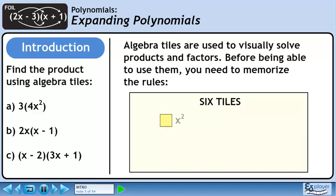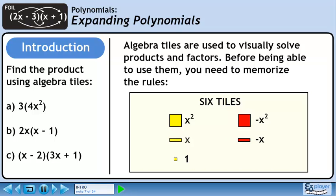There are six unique algebra tiles. The first tile is a large yellow square that represents positive x squared. The next tile is a yellow rectangle representing positive x. This tile is a small yellow square that represents positive 1. The large red square represents negative x squared. The red rectangle represents negative x. The last tile is a small red square representing minus 1.